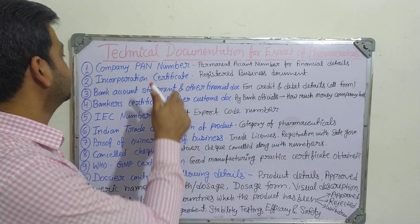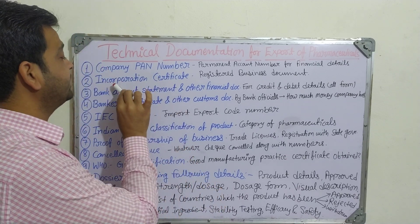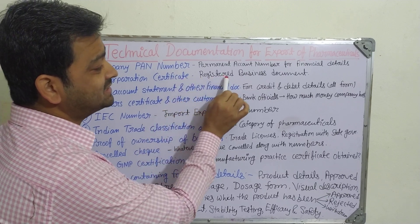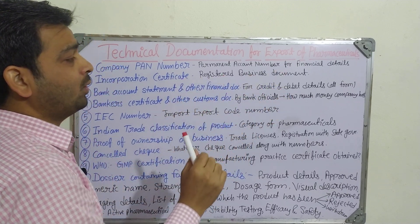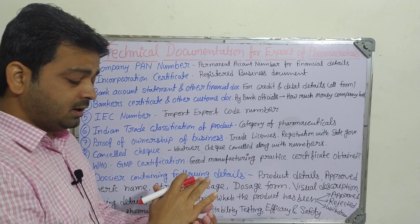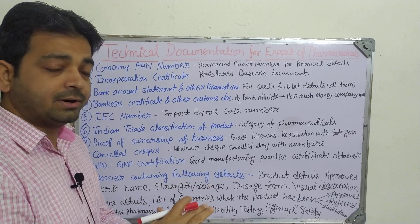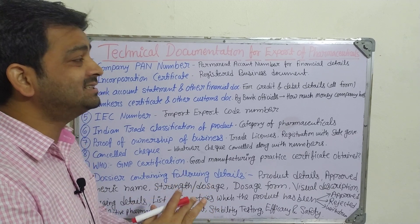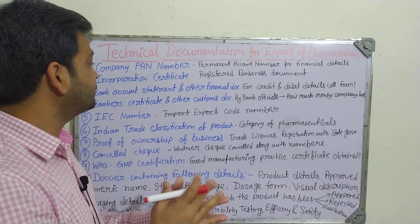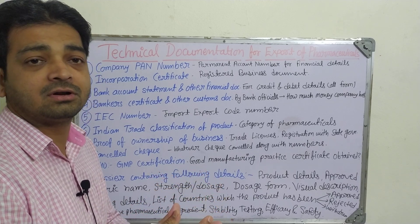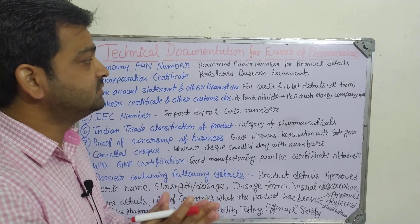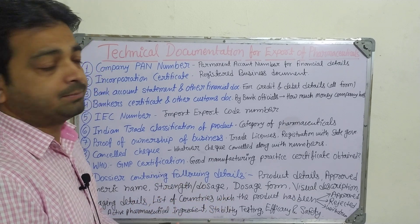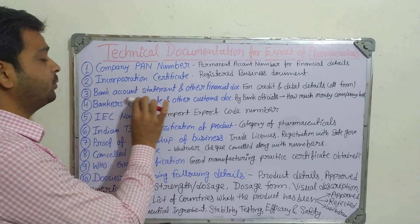The second one is the Incorporation Certificate — a registered business document. Whether the particular company, seller, or manufacturer is registered or not, this incorporation certificate is very important. Only then can the process proceed further.